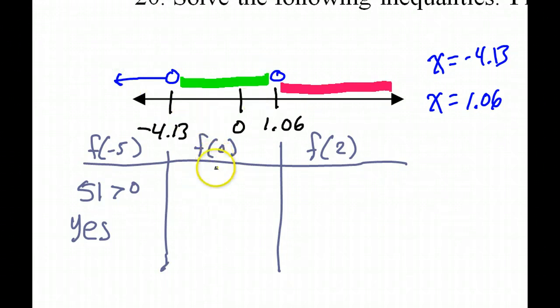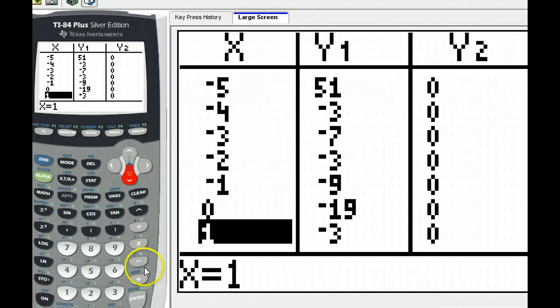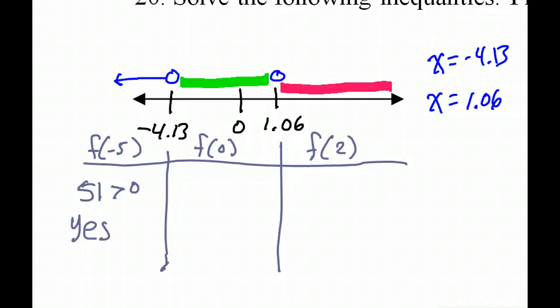All right, now I'm going to look at 0. And I can just check it on the calculator. So the value at 0 is negative 19. Okay, so I've got negative 19. And again, the question is, is that greater than 0? And clearly, no. Negative 19 is not greater than 0. That means the green zone doesn't have solutions. All right, so we'll just leave that blank.